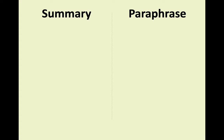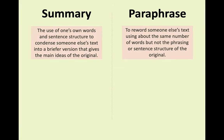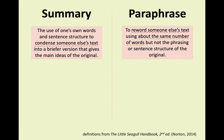Now, on to the discussion of how we incorporate research into our writing. When you aren't using the exact words from your source, but rather putting those ideas into your own words, you're either summarizing or paraphrasing. The strategies are the same, but these terms differ depending on how much you're translating. Summary is defined as when you condense someone else's text into a briefer version that gives the main ideas of the original. Paraphrase is when you reword someone else's text using about the same number of words. It might help to think of summaries as the text on the back of a book, while paraphrases are the CliffsNotes or SparkNotes.